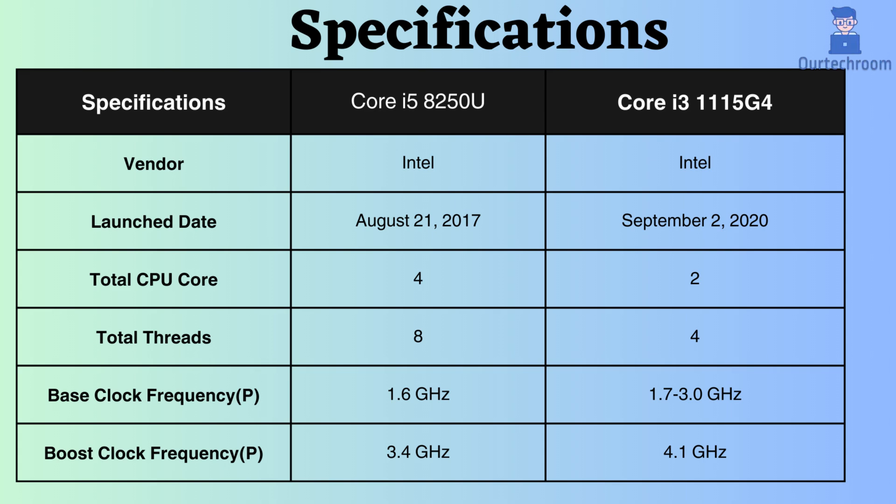The base clock frequency of the Core i5-8250U is 1.6 GHz, whereas that of the Core i3-1115G4 ranges from 1.7 GHz to 3 GHz. In terms of boost clock frequency, the Core i5-8250U reaches 3.4 GHz, whereas the Core i3-1115G4 reaches 4.1 GHz. With higher base and boost clock frequencies, the Core i3 may deliver slightly better performance under both normal and high CPU loads.